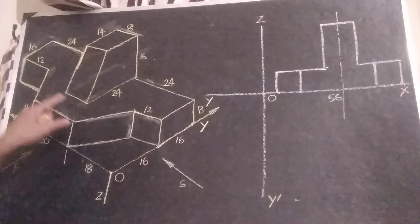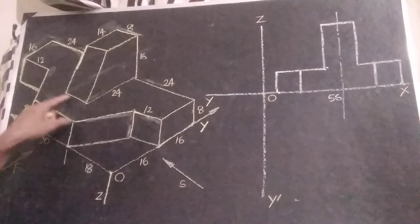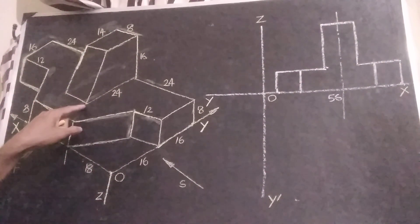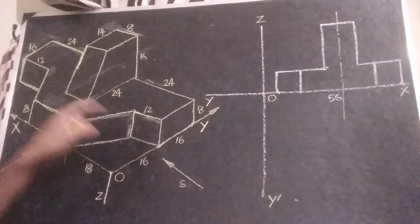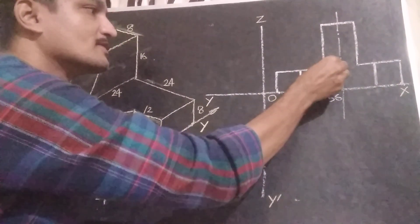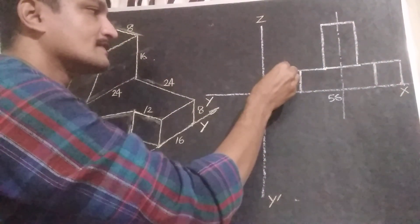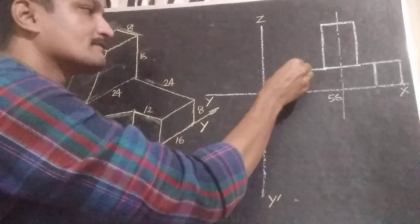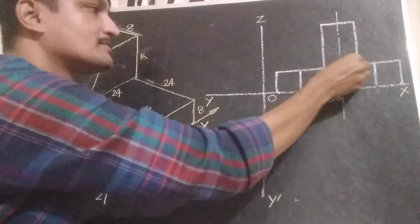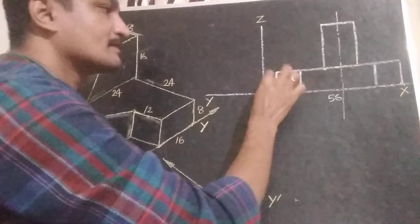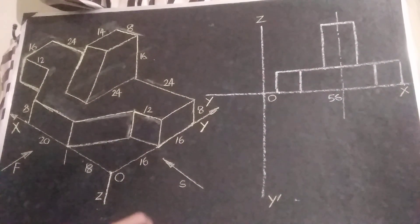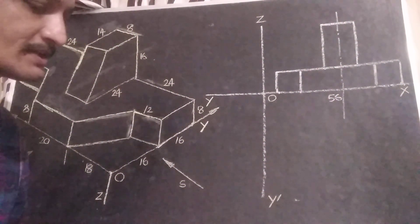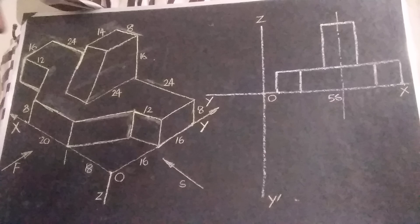We can see this line also, this side edge also in front view, so we can connect the whole shape — draw a straight line from this point to this point. This will become the front view of the object.